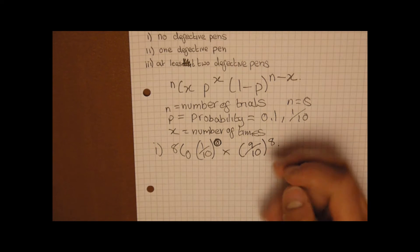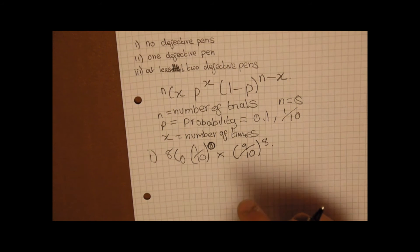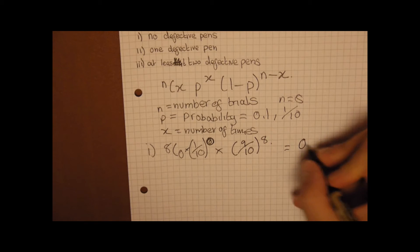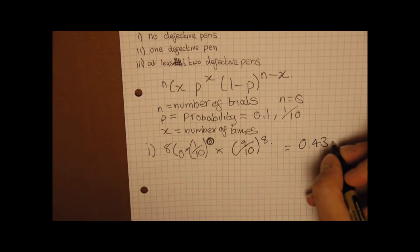Now you probably will put this in your calculator because it uses C, and C is your function that is most easily used on a calculator. So you just write 8C0 times 1 over 10 to the power of 0 times 9 over 10 to the power of 8. This should give you an answer to 3 decimal places of 0.430.